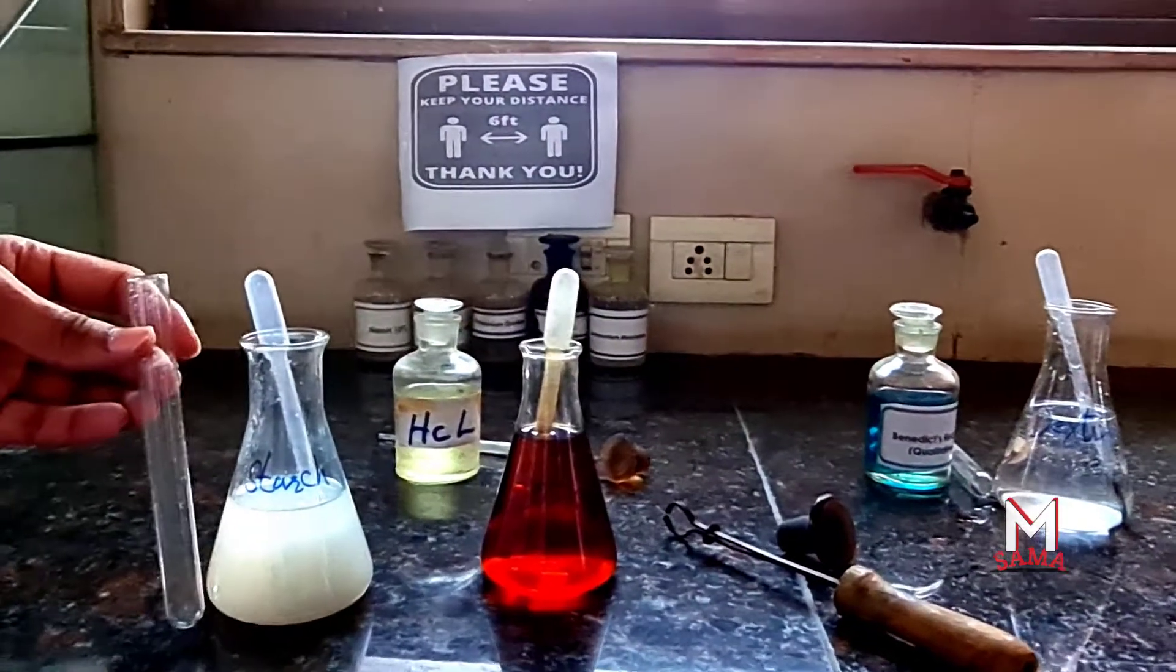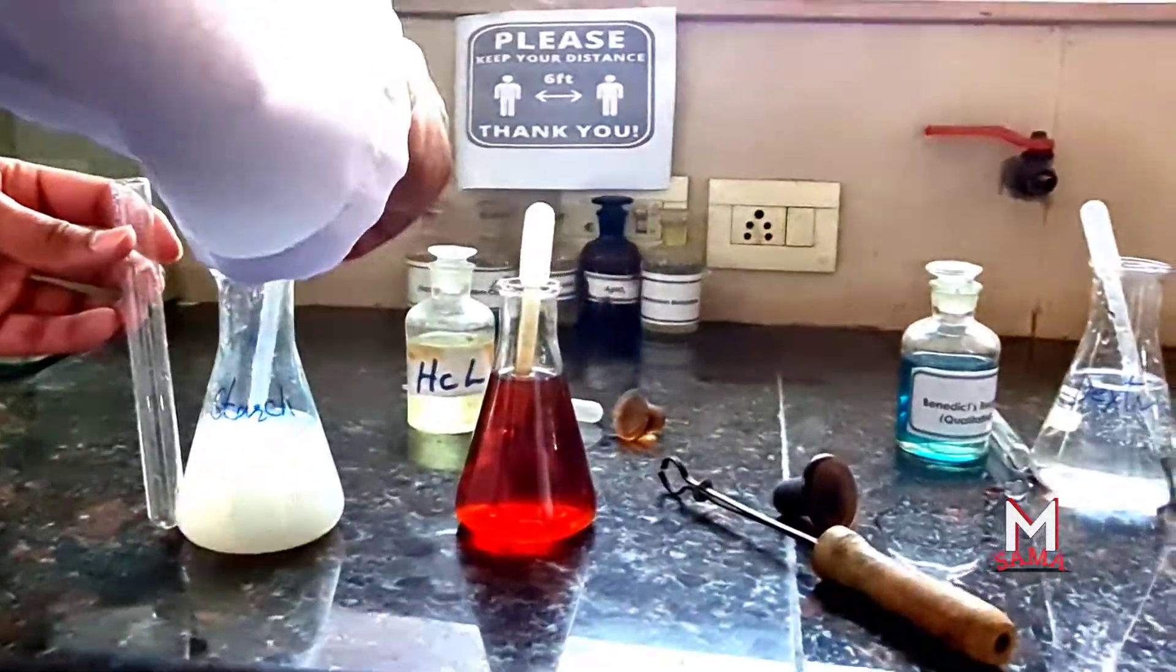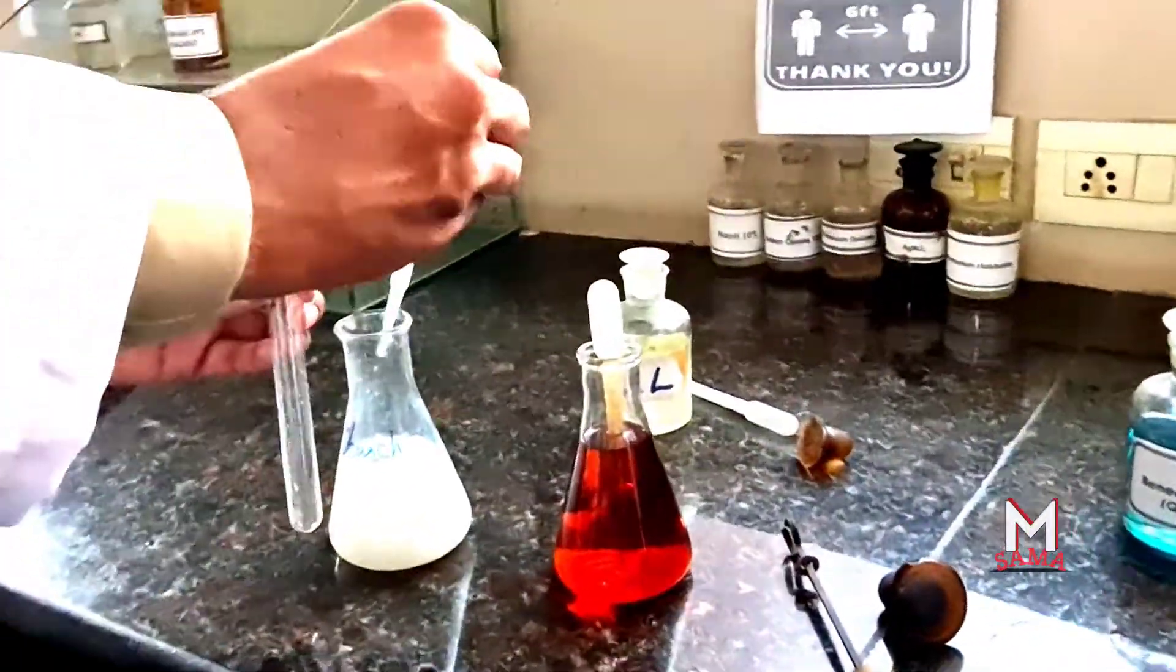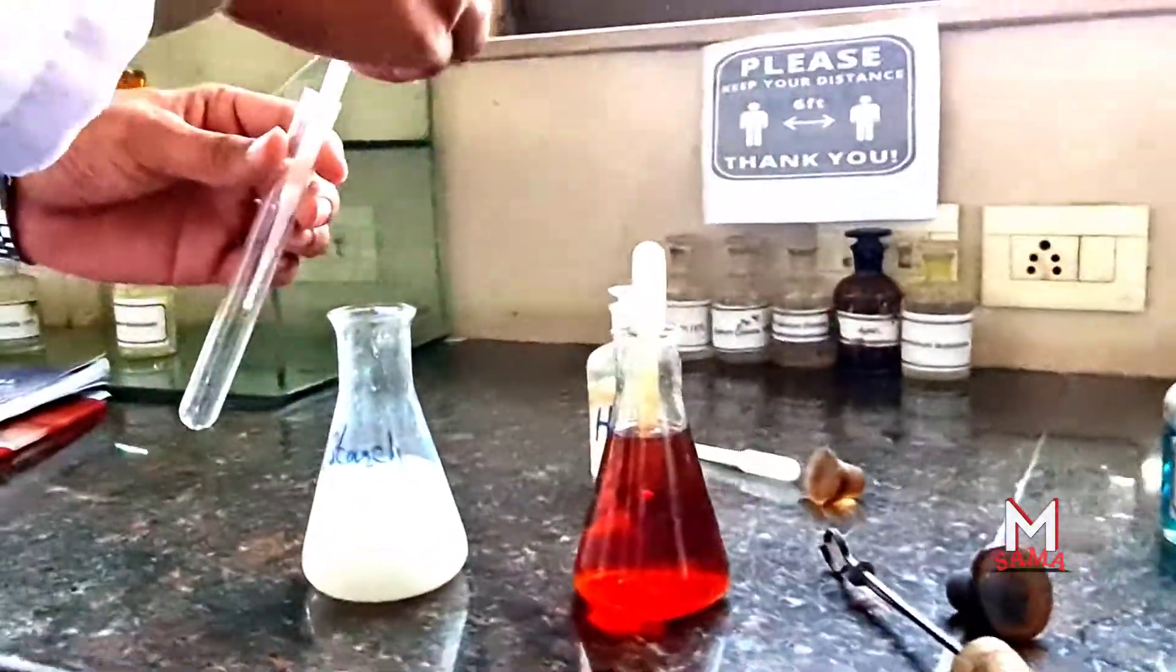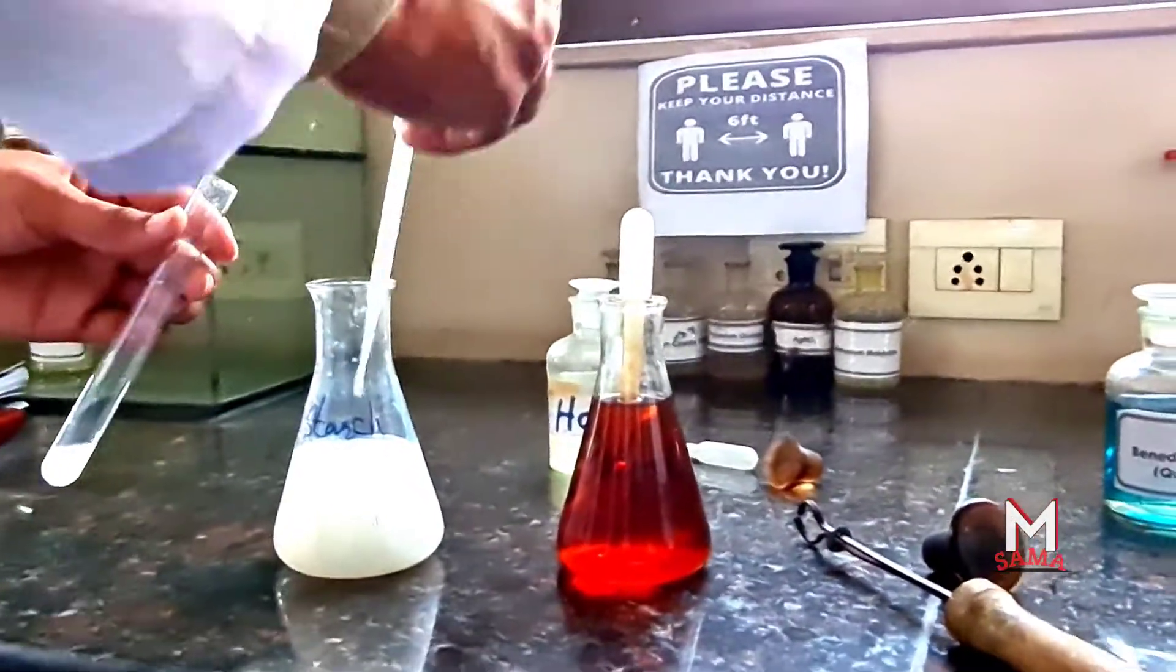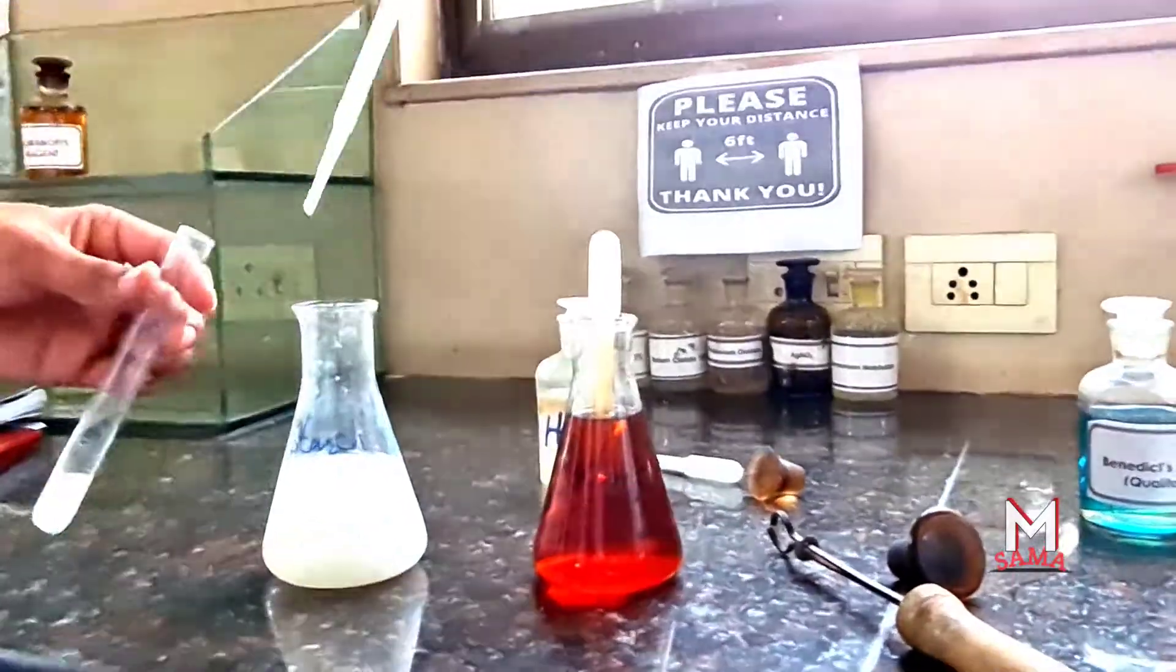First of all, take a clean test tube and add 3 ml of the given solution which is to be tested for the presence of starch. In this case, the given solution contains starch, so we will call it starch solution. We will add 3 ml of starch solution in this test tube.